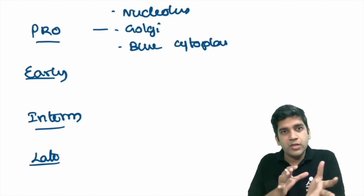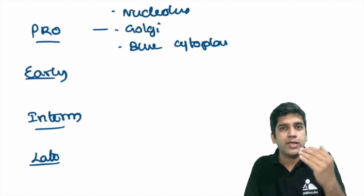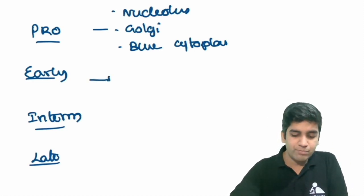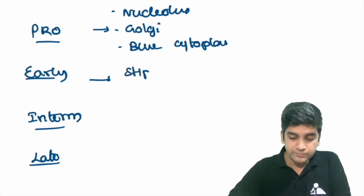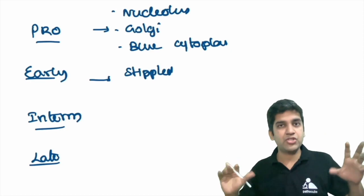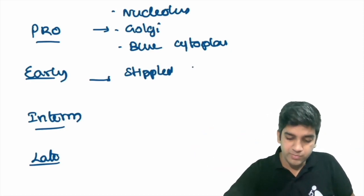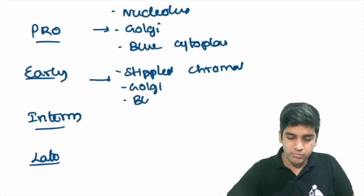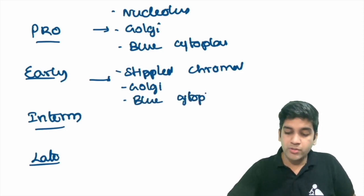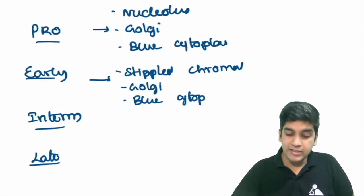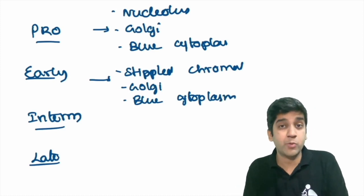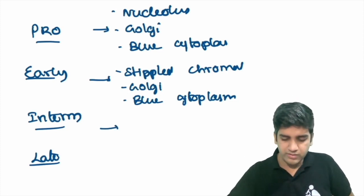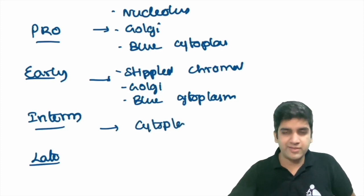In the early normoblast, the Golgi apparatus is still present as there's a transition — pro starts producing more and more hemoglobin, but in early normoblast the synthesis is distributed. The nucleoli will not be prominent; instead it becomes stippled chromatin, meaning a mixture of euchromatin and heterochromatin, indicating it's still functional. The early normoblast also has a bluish cytoplasm. The main difference between a pro-normoblast and an early normoblast is the nucleus: prominent nucleoli means pro-normoblast; stippled nuclei means early normoblast.